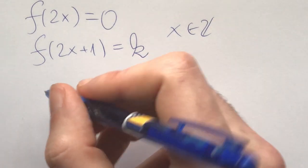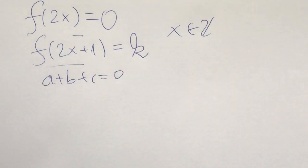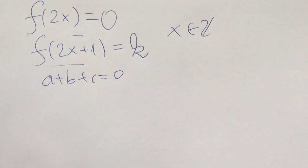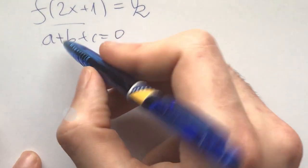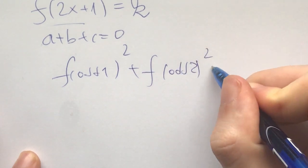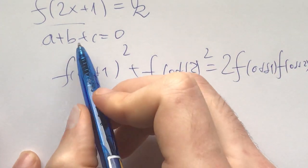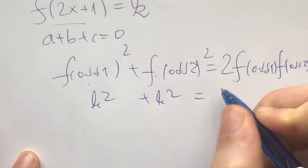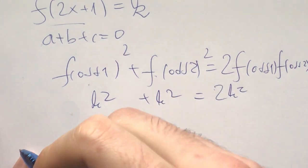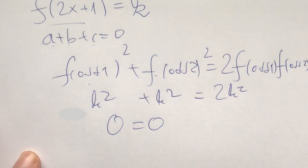Plugging this back into the original and checking all a + b + c = 0: if a + b + c = 0, you'll either have one even and two odds, or all three even. With one even and two odds, f(odd₁)² + f(odd₂)² = 2·f(odd₁)·f(odd₂) is true because all odds equal k, giving k² + k² = 2k². If all numbers are even, we get 0 = 0. So this solves the case f(2) = 0.